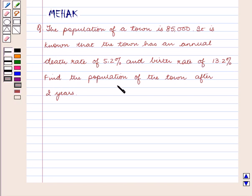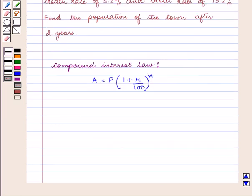Find the population of the town after 2 years. The compound interest law is amount A equals P into 1 plus R upon 100 raised to power N, which is applicable to any quantity that increases or decreases.